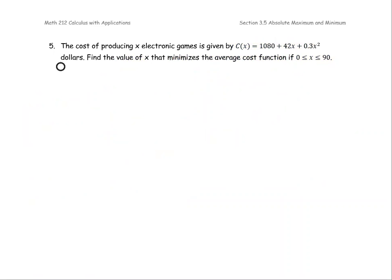Example 5. The cost of producing X electronic items is given by C(X) = 1080 + 42X + 0.3X² in dollars. Find the value of X that minimizes the average cost function if X is between 0 and 90.